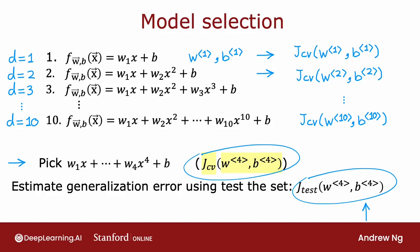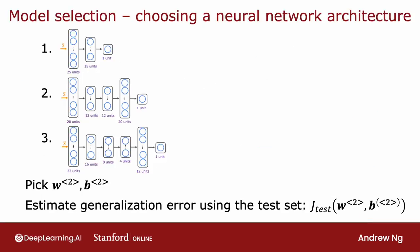This model selection procedure also works for choosing among other types of models—for example, choosing a neural network architecture. If you are fitting a model for handwritten digit recognition, you might consider three models: a small neural network, a somewhat larger one, and an even larger one.